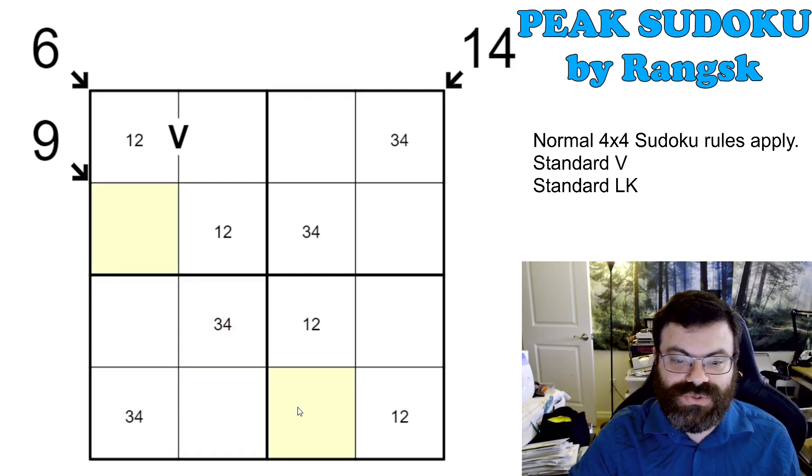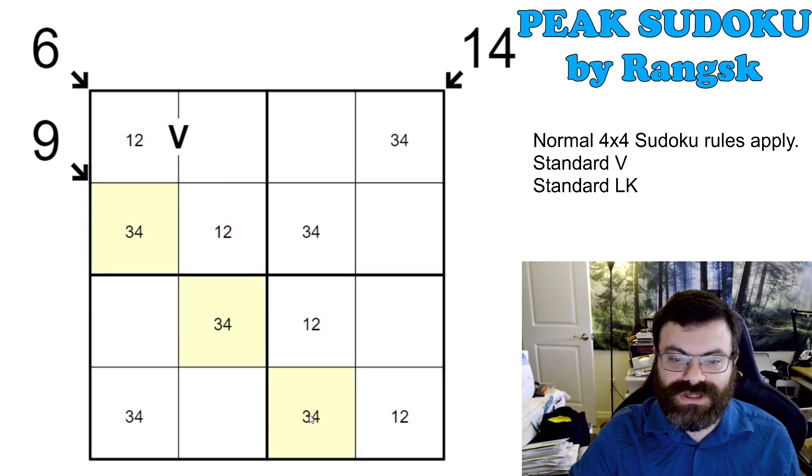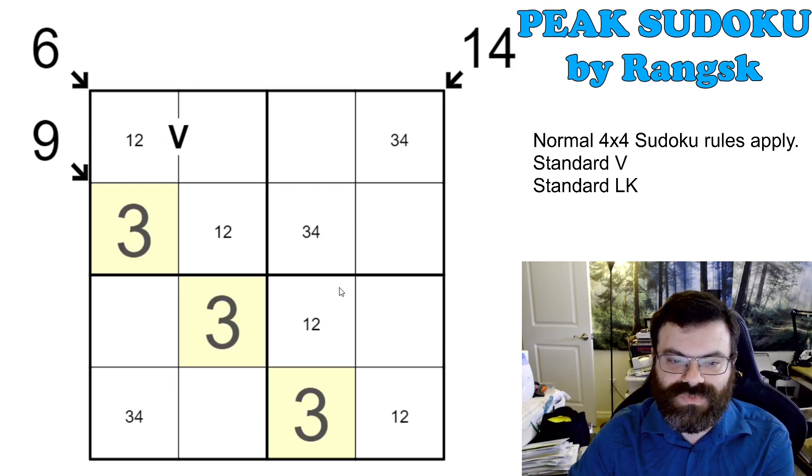And so now on these two 9 cells here that are on the 9 little killer, these actually also can only be 3 and 4 because the 1, 2s are used up in their boxes. So if you look, the minimum that this can add to is 9, and so there's 0 degrees of freedom on this little killer as well. So we can fill in 3s here, and that actually cascades, and if you believe it, we can actually finish all the 3s and 4s in the entire puzzle.